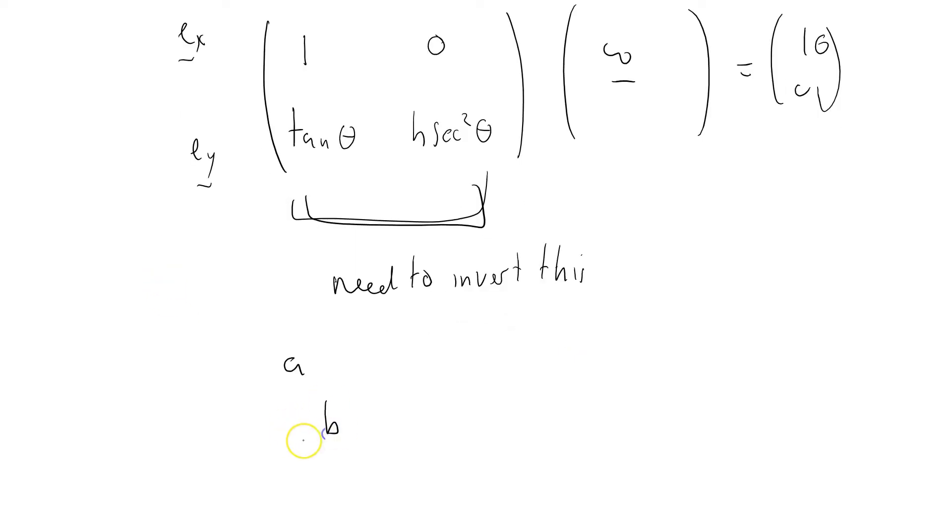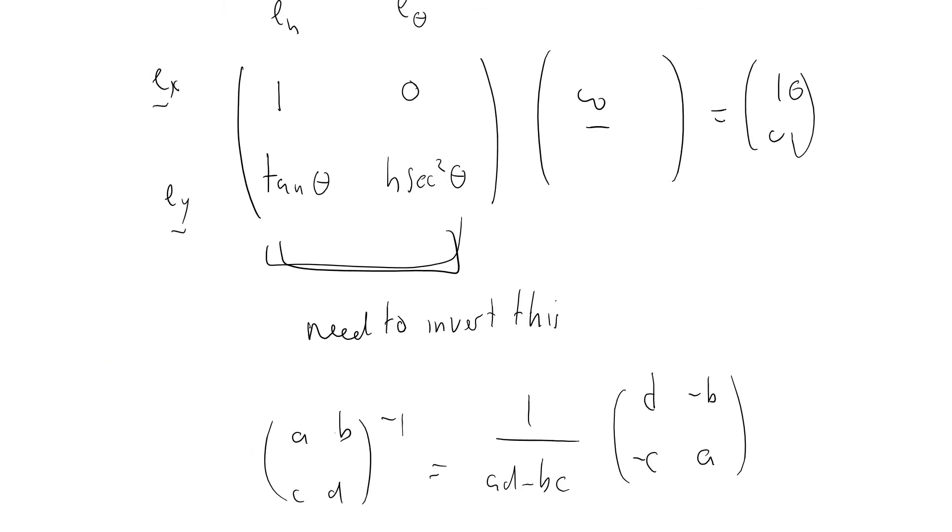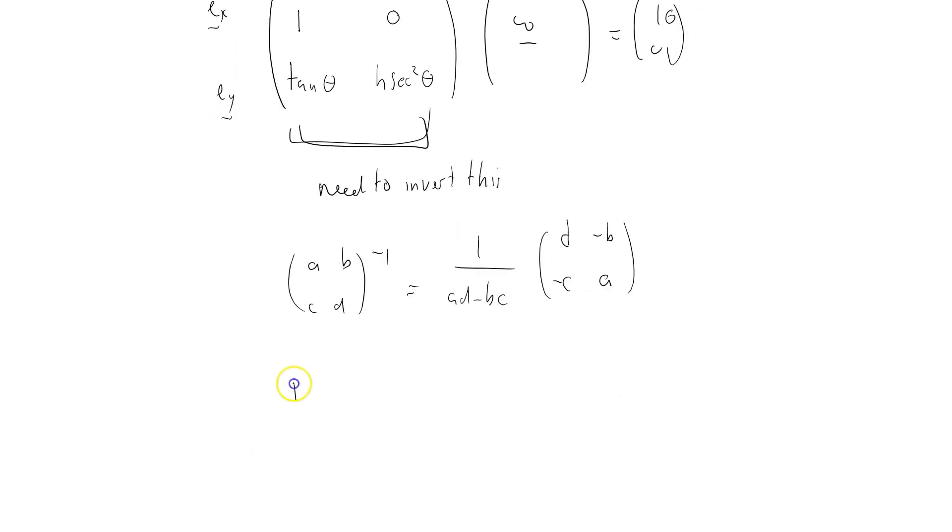Let me just remind myself how to invert a 2 by 2 matrix. (a b; c d)^(-1) equals 1 over the determinant (ad - bc) times: swap and change—so d, -b, -c, a. My inverse matrix here: we've got (1, 0; tan θ, h sec²θ) to the minus 1.